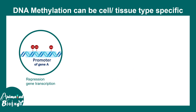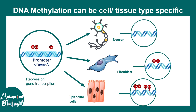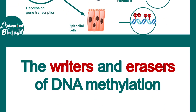Promoter methylation can also be tissue specific. Imagine we have three different cell types and a gene of type A — this gene would not be expressed everywhere. In the neuron, the promoter is not methylated at all and the gene is active. Compared to the neuron, fibroblast and epithelial cells have methylation in this gene's promoter, and hence this gene is inactive in these cell types, suggesting DNA methylation is an important regulator of gene expression.